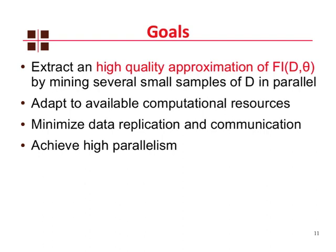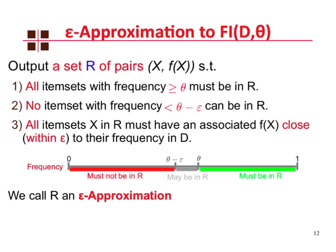Let me formalize what I mean by high-quality approximation. We will have a parameter epsilon, and we want a set of pairs of itemsets and frequency estimations such that all items with frequency at least as high as the minimum frequency threshold must be in the output, and no items with frequency much lower than the threshold — that is, lower than theta minus epsilon — can be in the output. We also want all frequency estimations to be close to the real frequency within epsilon. We call an output satisfying this condition an epsilon approximation, which is basically a superset of the original collection of frequent itemsets.